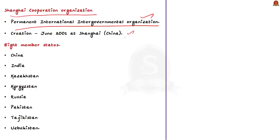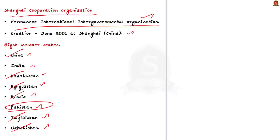Currently, the SCO comprises eight member states: China, India, Kazakhstan, Kyrgyzstan, Russia, Pakistan, Tajikistan, and Uzbekistan. The founding members were China, Russia, Kazakhstan, Kyrgyzstan, and Uzbekistan. India and Pakistan, which were earlier observer states, joined the SCO as full members on 9th June 2017 at a summit in Astana — now renamed Nur-Sultan — the capital of Kazakhstan.